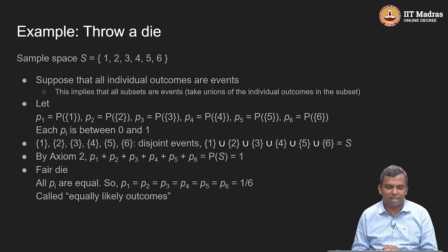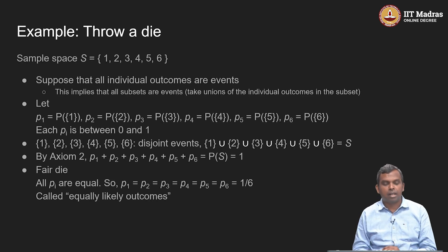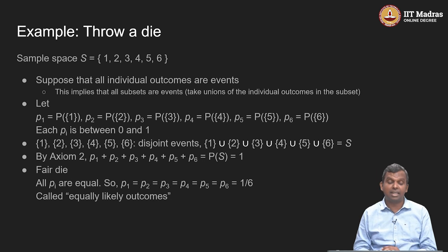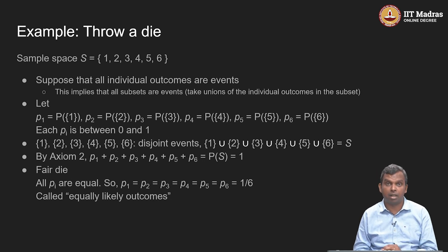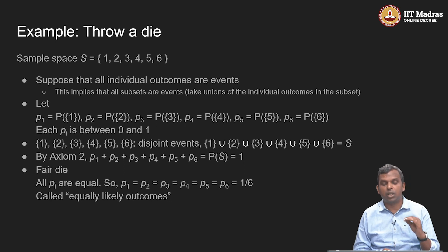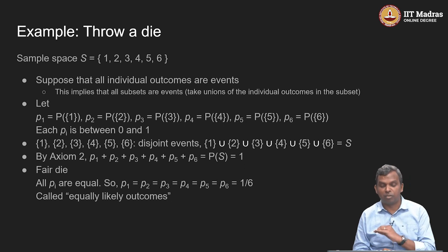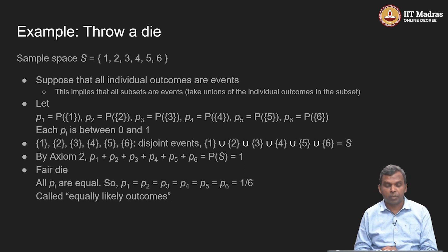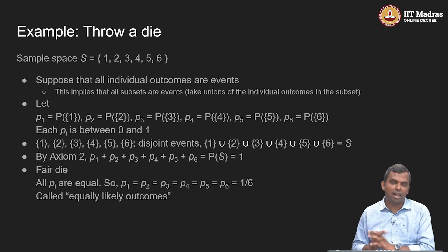I am going to start with an example which is throwing a die. When you throw a die, the sample space has 6 possible outcomes: 1, 2, 3, 4, 5, 6. We will assume that all the individual outcomes are events.